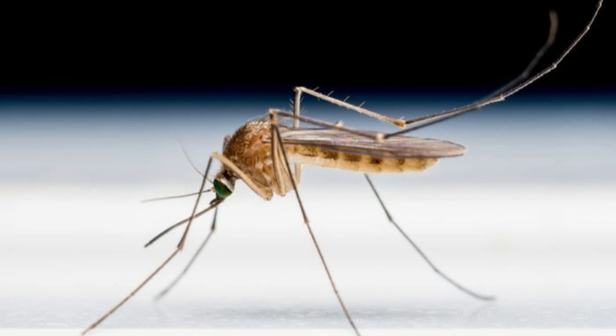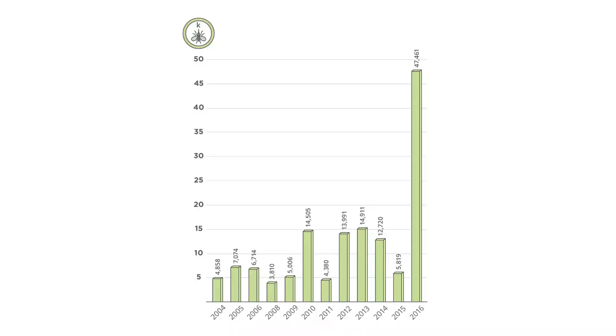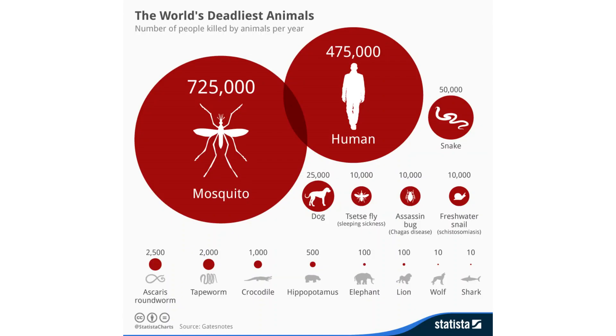Some of you may have guessed it already, but the credit of the deadliest animal on this planet — which has killed off the maximum number of people — goes to the teeny tiny mosquito. Finding it hard to believe? The numbers say otherwise. By transmitting diseases like malaria, yellow fever, chikungunya, dengue, Zika, encephalitis, and filariasis, mosquitoes cause the deaths of more people than any other animal.